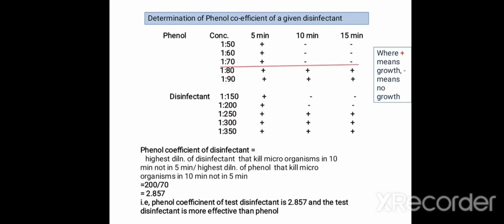The highest dilution for phenol is 1:70 and the highest dilution for the disinfectant is 1:200, both killing microorganisms in 10 minutes but not in 5 minutes. So the phenol coefficient is 200 divided by 70, which equals 2.857. Since the phenol coefficient is more than 1, the test disinfectant is more effective than phenol.